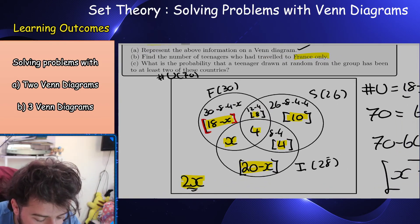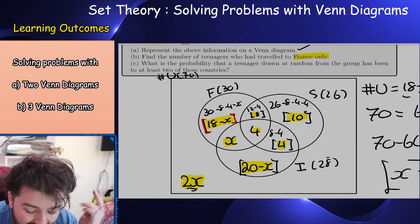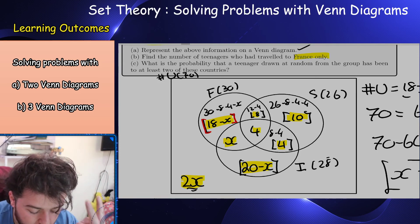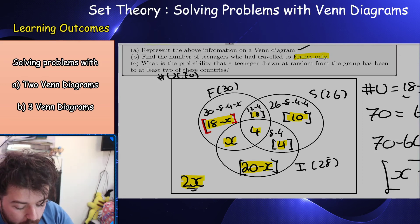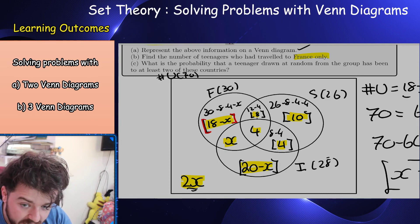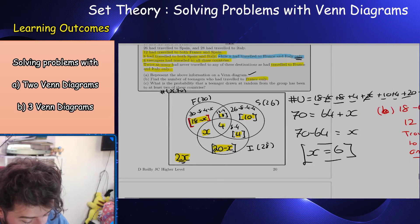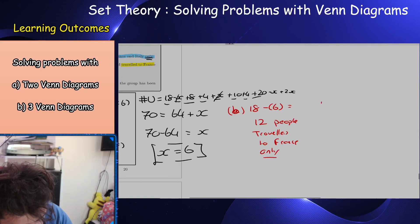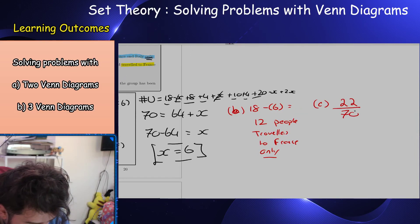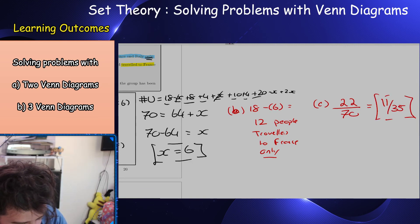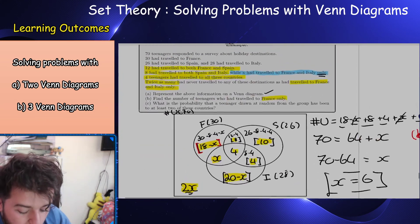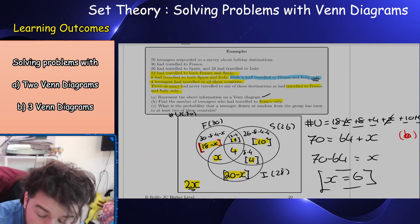Part c asks for the probability that a teenager drawn from the group has been to at least two of these countries — meaning two or three countries. Adding those regions: 4 plus 4 plus 8 plus 6 equals 22. So the probability is 22 over 70, which simplifies to 11 over 35.